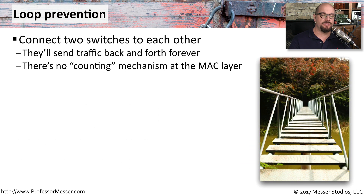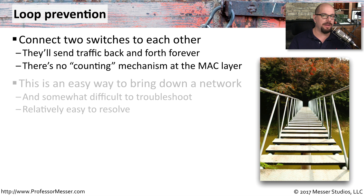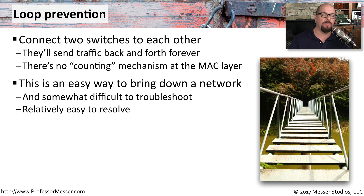At OSI layer two, the MAC address layer, there's no way for packets to know when they've been seen before. If you connect two switches to each other, packets will rotate through those switches until you break the connection. This can bring down a network very quickly — as more people put traffic on the network, more and more traffic will loop, and you could bring down a network in a matter of seconds.